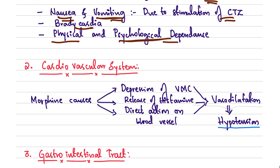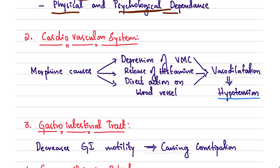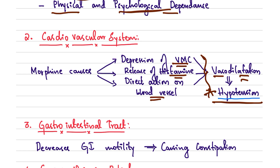Regarding the cardiovascular effects of morphine: it causes depression of the vasomotor center, releases histamine, and has a direct action on blood vessels. All three of these lead to vasodilation, thus causing hypotension in the patient.